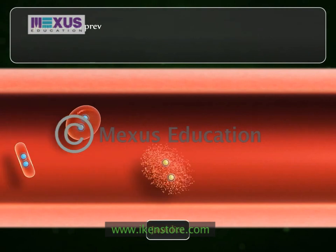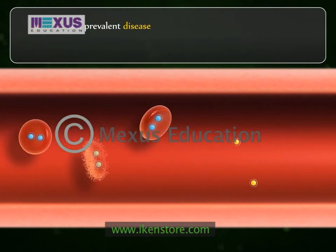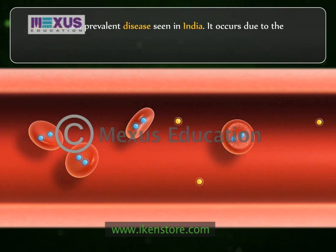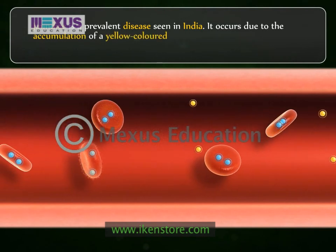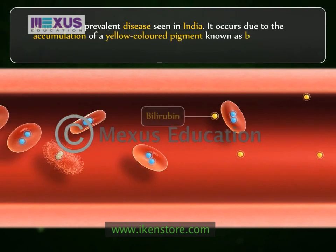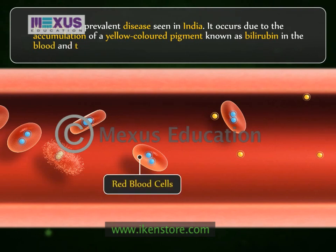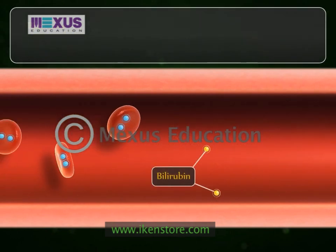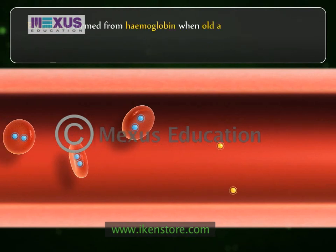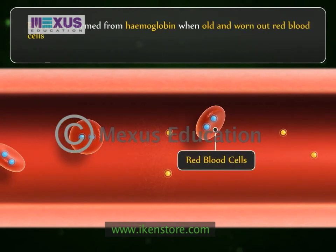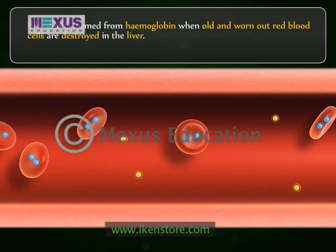Jaundice is a prevalent disease seen in India. It occurs due to the accumulation of a yellow-colored pigment known as bilirubin in the blood and tissues. Bilirubin is formed from hemoglobin when old and worn-out red blood cells are destroyed in the liver.